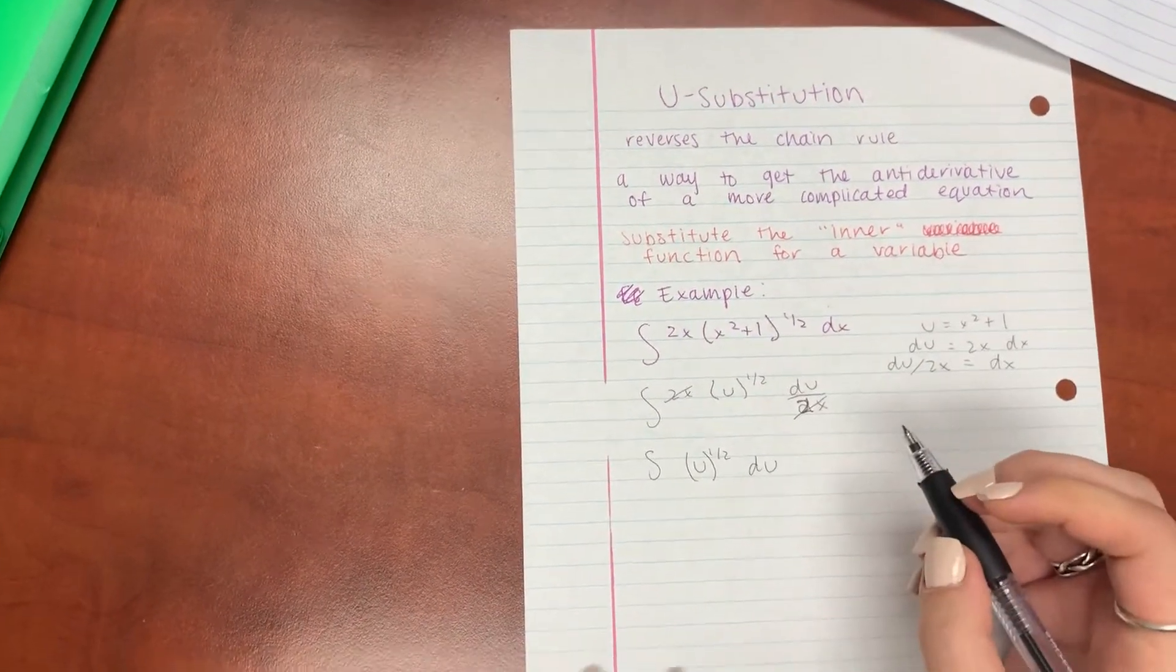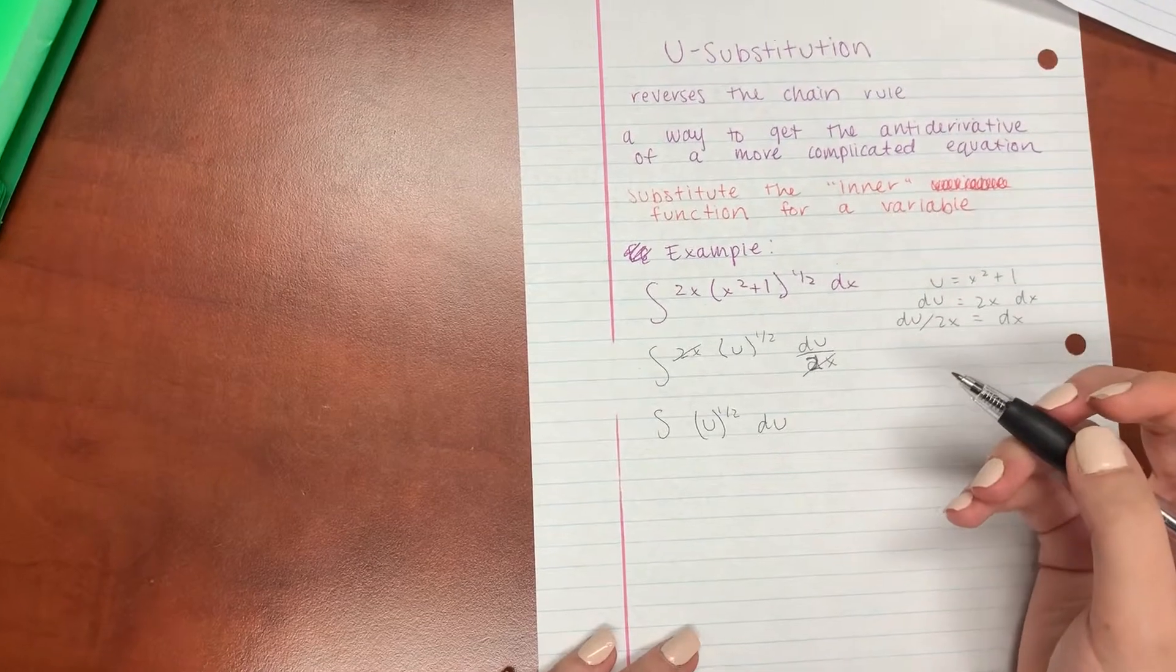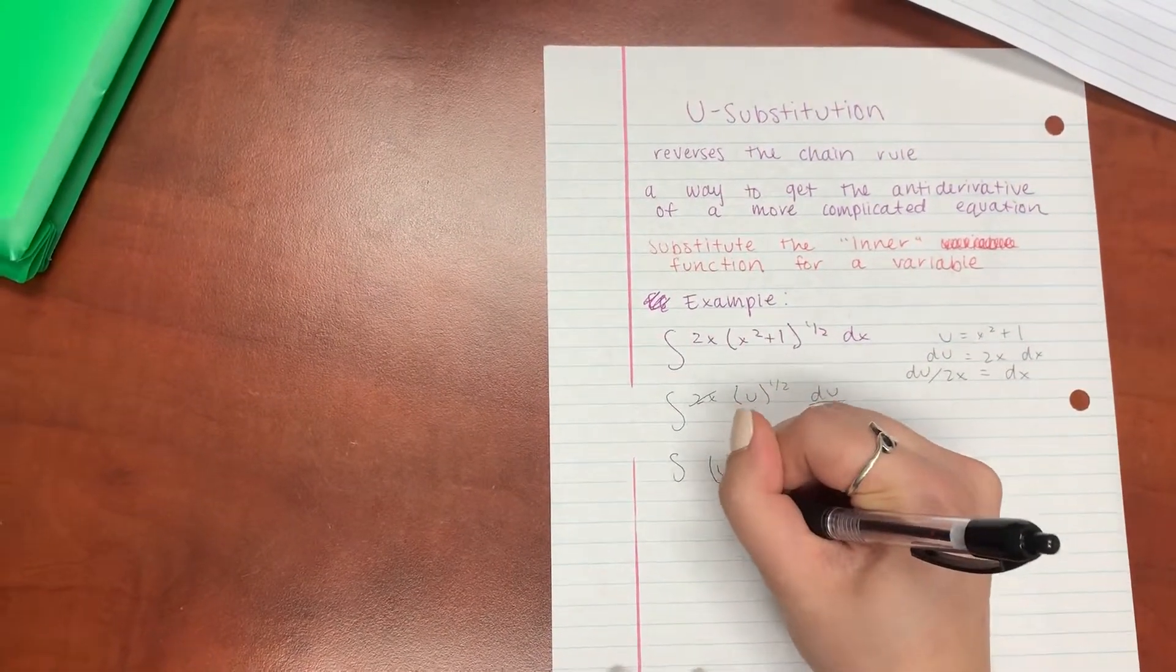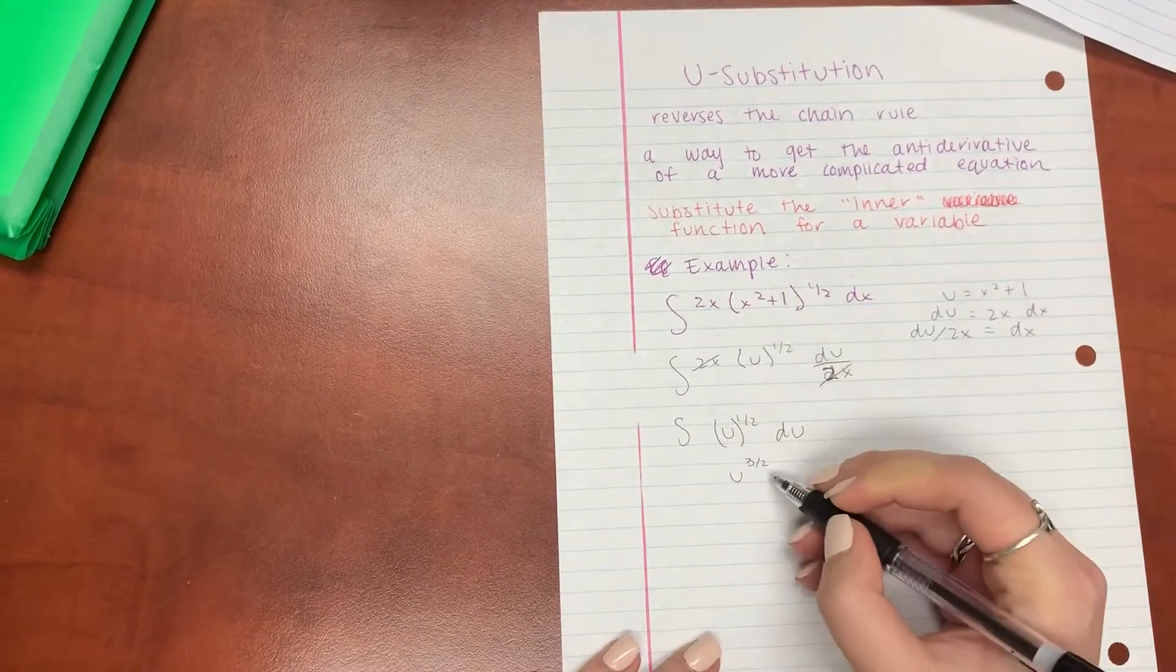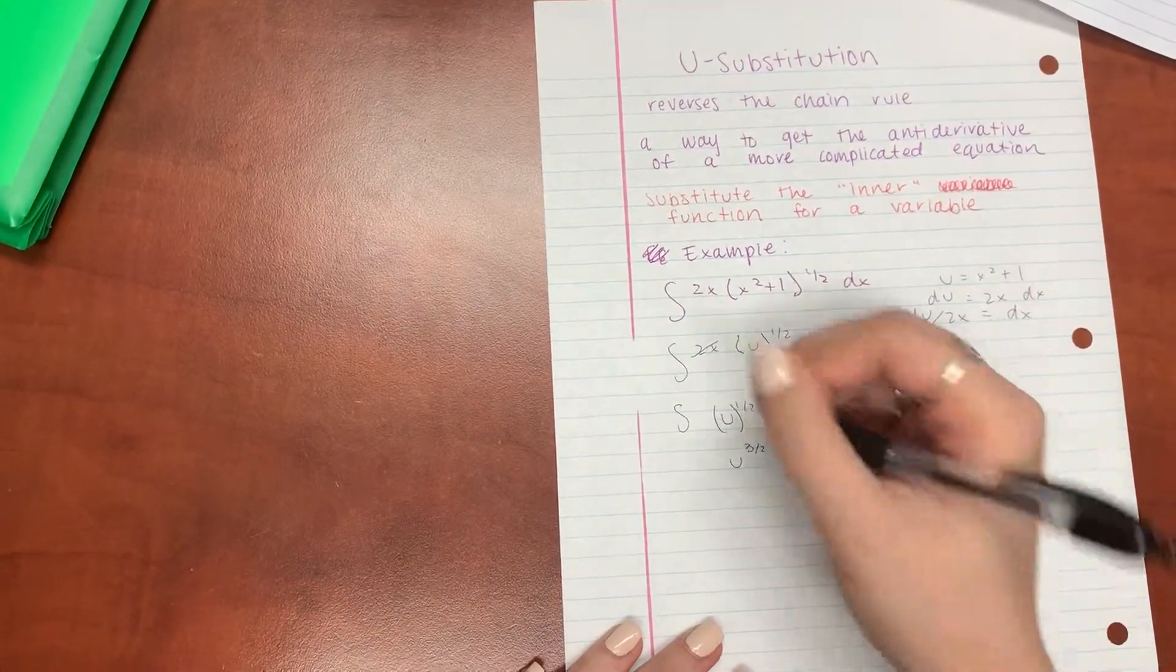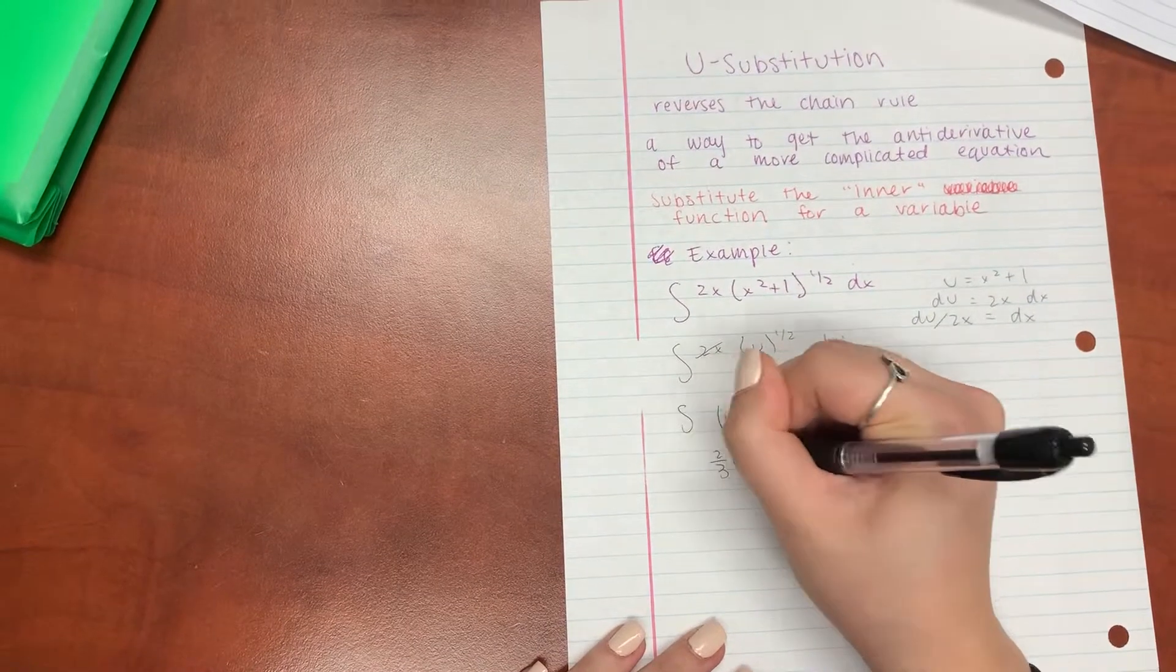And so now we can take the antiderivative of this function. So this becomes u raised to the 3 halves, and we just multiply it by the inverse of that exponent, so it becomes 2 over 3, and we can't forget our plus c.